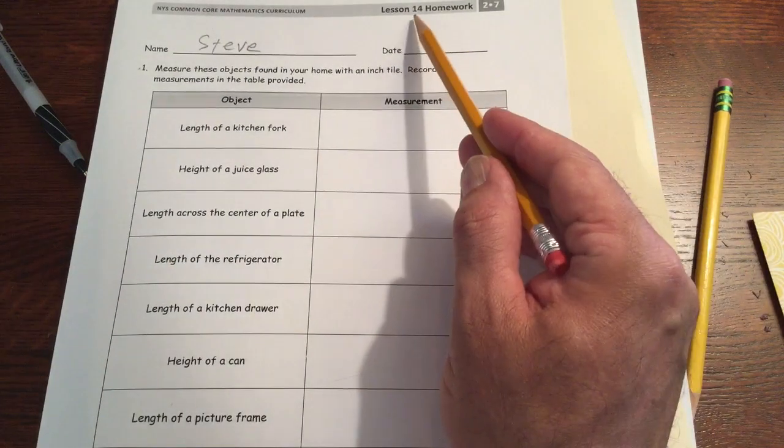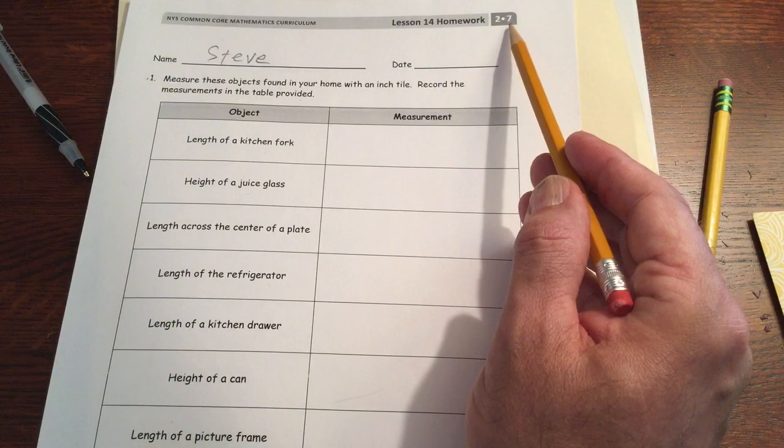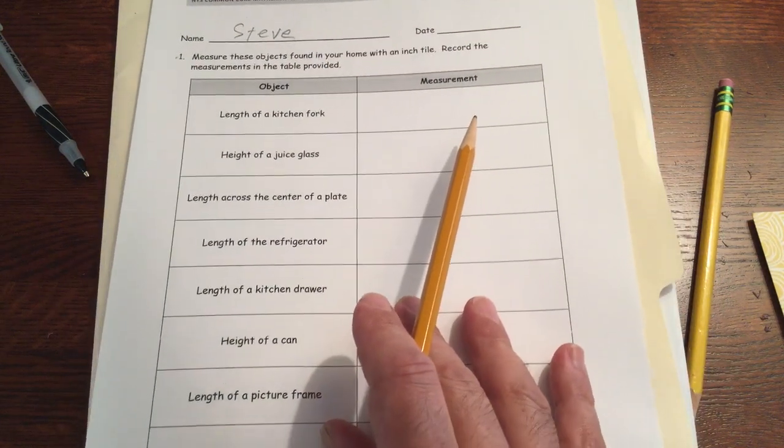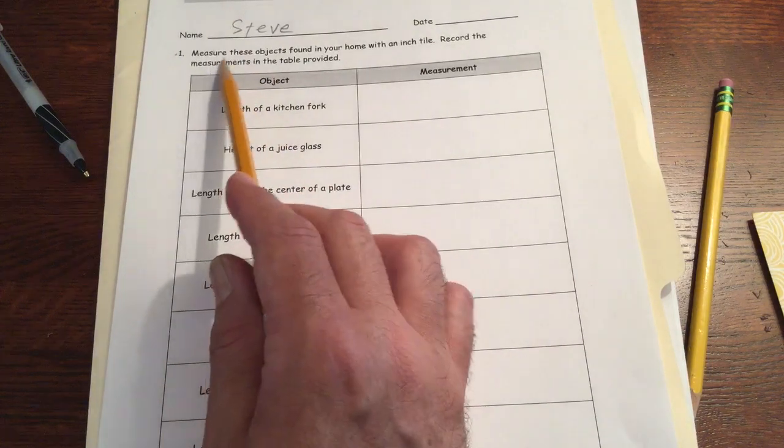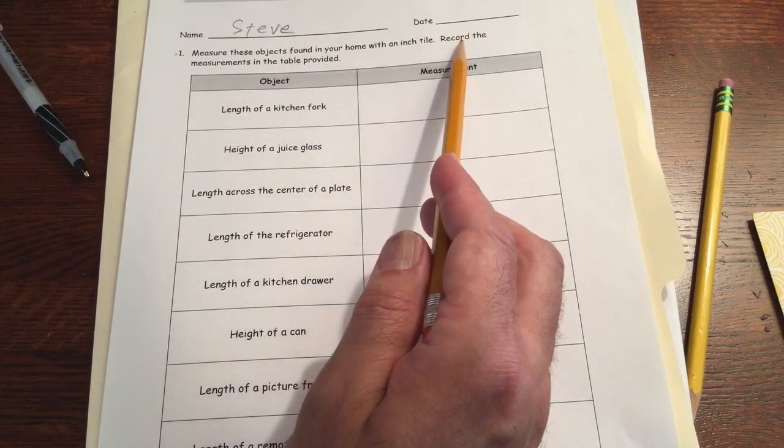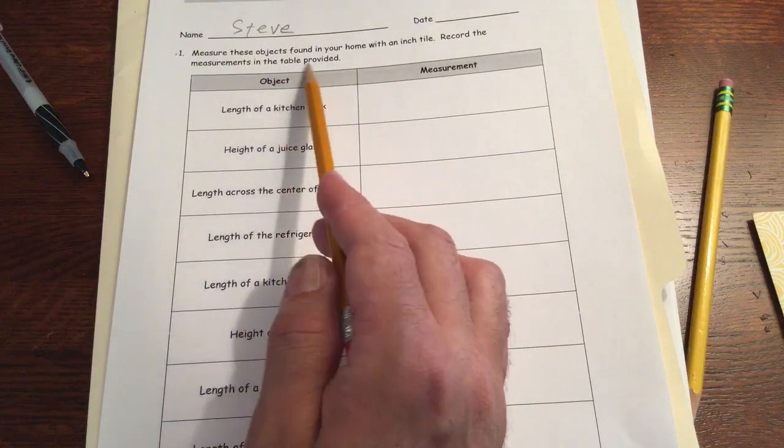Welcome to lesson 14 homework, module 7, grade 2. Got your name there. We're going to be doing some measuring here. Measure these objects found in your home with an inch tile. Record the measurements in the table provided.